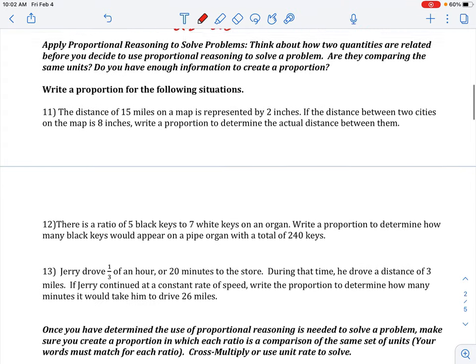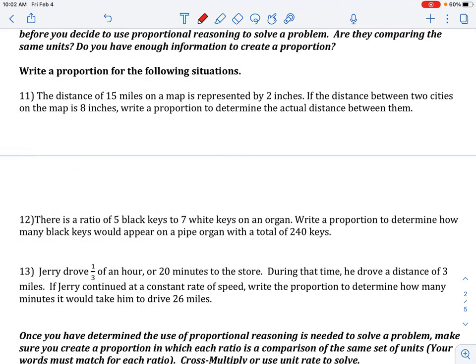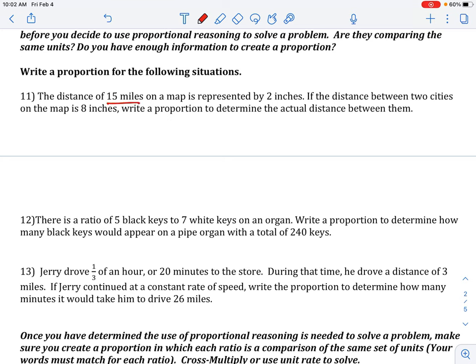Number 11. Write a proportion for the following situation. The distance of 15 miles on a map is represented by 2 inches. If the distance between the two cities is 8 inches, write a proportion to find the actual distance. When you're writing proportions, remember we need a word ratio, a known ratio, and an unknown ratio. The word ratio that we would do is miles over inches. Let's go back and after we find out what our word ratio is, let's set up our proportion.